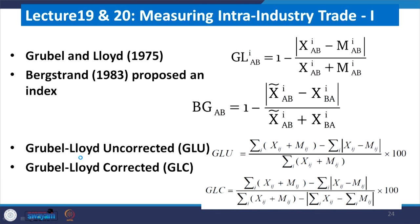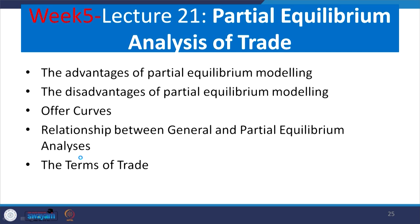We measured intra-industry trade by different approaches: the Grubel and Lloyd approach, then the BG approach, Boxstrand approach, and the Grubel and Lloyd corrected approach. In lecture number 21, week number 5, we started discussing partial equilibrium analysis of trade, emphasizing the simple demand framework. From there we also derived a general equilibrium analysis by using the offer curve, from which we discussed the terms of trade.